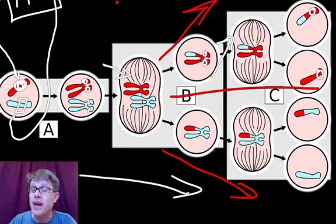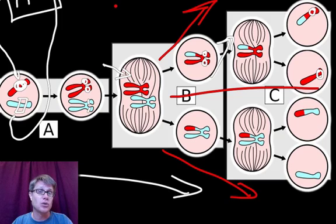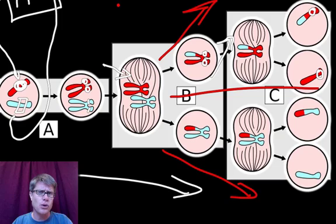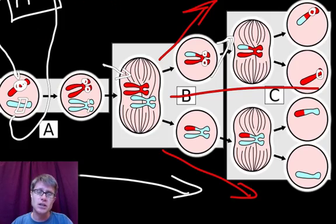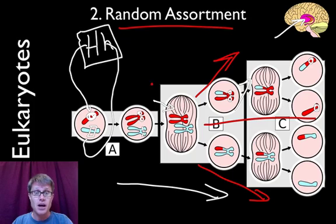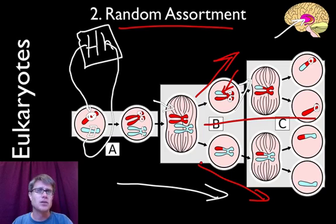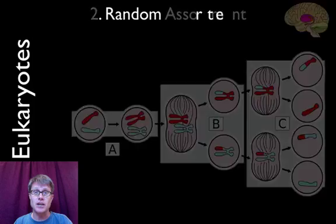Remember, we have thousands and thousands of genes and each of those assorts independently. Imagine flipping thousands and thousands of coins — how often will the exact same combination come up? It's going to be really, really rare. And on top of that we also see crossing over occurring, so those two things together create a tremendous amount of genetic variability.